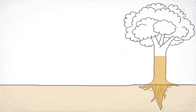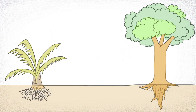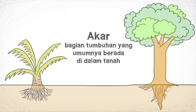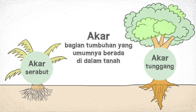Kali ini kita akan membahas tentang akar. Akar adalah bagian tumbuhan yang umumnya berada di dalam tanah. Dalam dunia tumbuhan dikenal dua jenis akar, yaitu akar tunggang dan akar serabut.